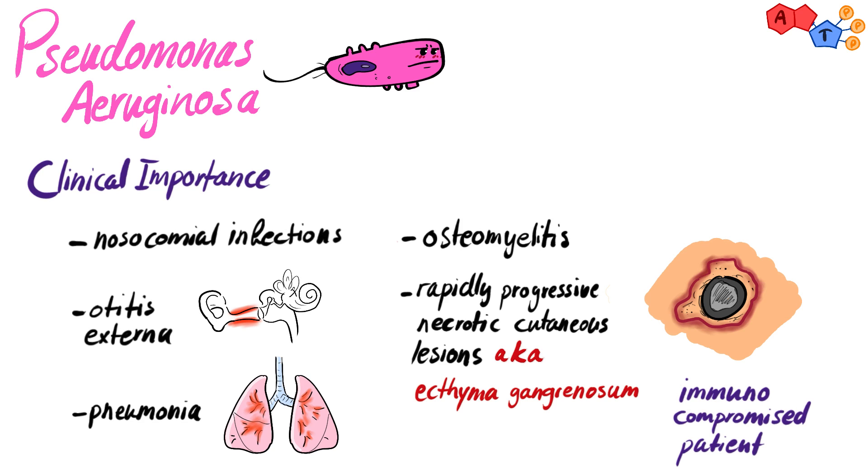And that's pretty much all you have to know about Pseudomonas, so let's move on. The second gram-negative bacteria that we will discuss is E. coli. It's one of the most high-yield bacteria that you need to know about, so let's begin with its distinguishing features.